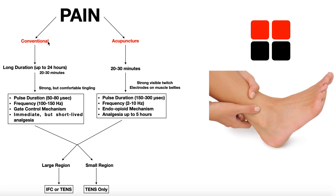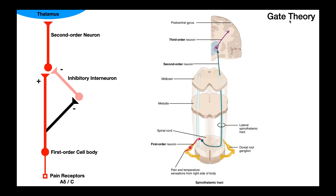Conventional TENS and IFC use something called a gate control mechanism. The gate theory, some of it is illustrated over here on the left side of the screen. This is a pretty simplistic diagram, but remember that this really is just the spinal thalamic tract, which is a pathway that we talked about in previous videos that conveys pain information, among other things, to the brain. There are just a few other details that we left out, like these inhibitory interneurons, which we'll talk about in a few minutes.